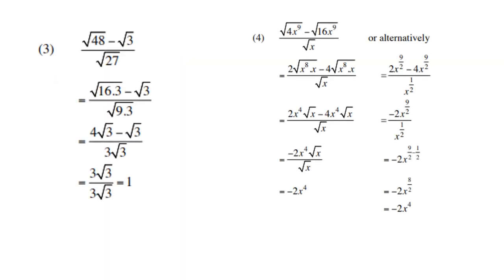Number 3: square root of 48 is 16 times 3, and square root of 27 is 9 times 3. So we get 4 times square root of 3, and the denominator is 3 times square root of 3. All three terms are like surds, so 4 square root of 3 minus 1 square root of 3 is 3 square root of 3, divided by 3 square root of 3, which equals 1.